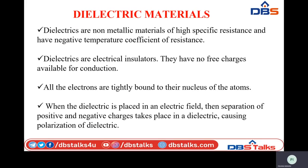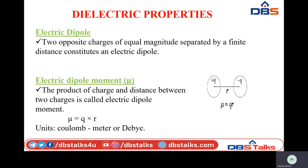Dielectrics are mostly used for storing electrical charge. Coming to important definitions: all dielectrics are nothing but dipoles — dipoles means two poles. Each dielectric has one positive pole and one negative pole. Whenever two opposite charges of equal magnitude are separated by a finite distance, it is called an electric dipole. Here +q is the positive charge and −q is the negative charge, separated by a finite distance R.